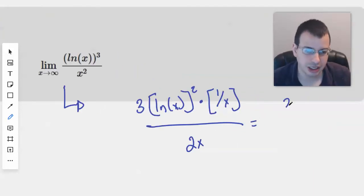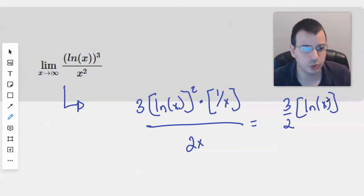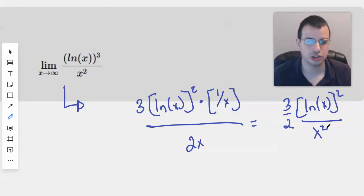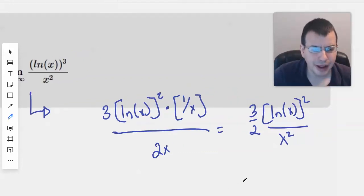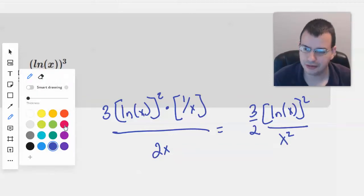Rewrite this slightly. We have 3 halves times natural log of x quantity squared, all over x squared, because we took this and moved that down.